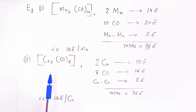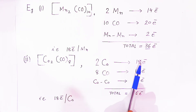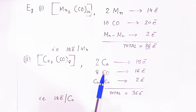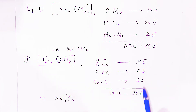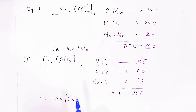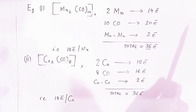Similarly, in the dimer Co2(CO)8, there are 2 cobalt atoms. Two cobalt atoms contribute 18 electrons in the valence shell, 8 carbonyl ligands provide 16 electrons, and the Co–Co bond contributes 2 electrons — giving a total of 36 electrons. Per cobalt atom, that is 18 electrons. That is why this dimer complex is also stable, and these are very important points from the examination point of view.